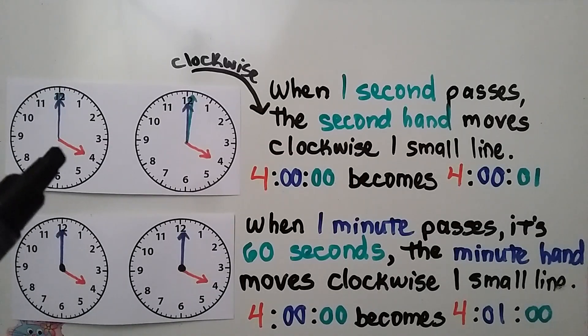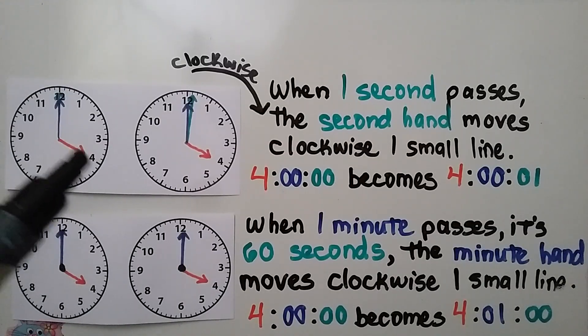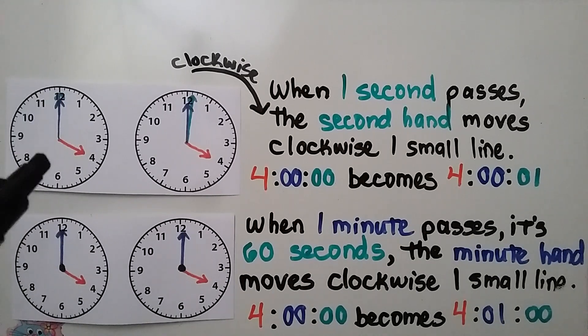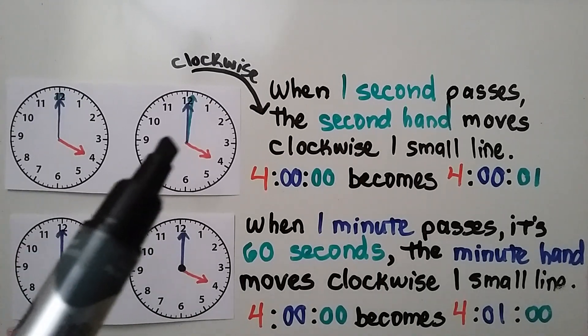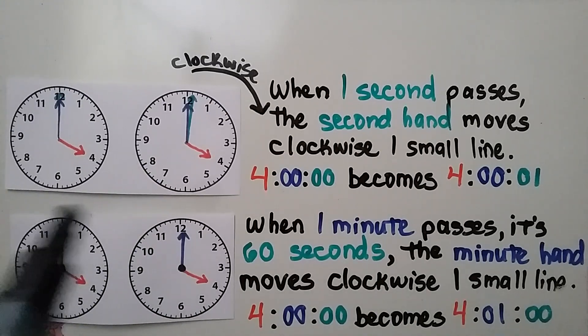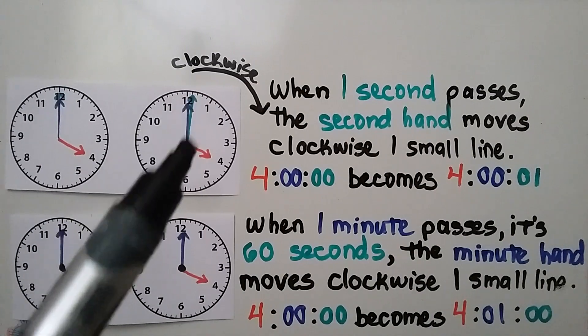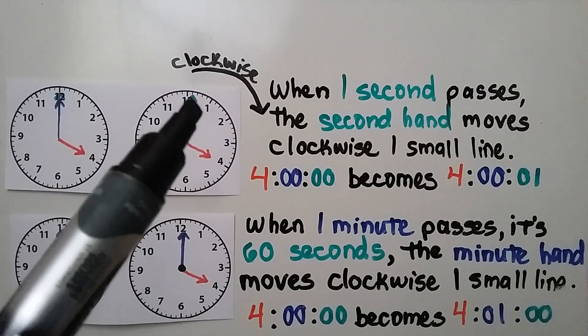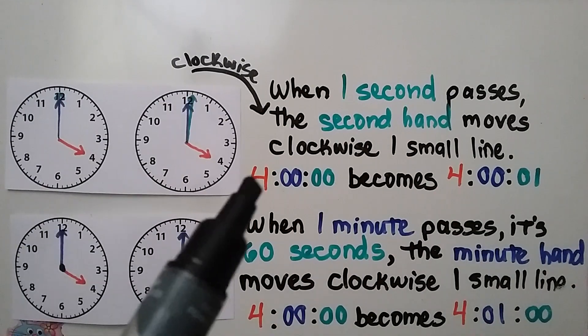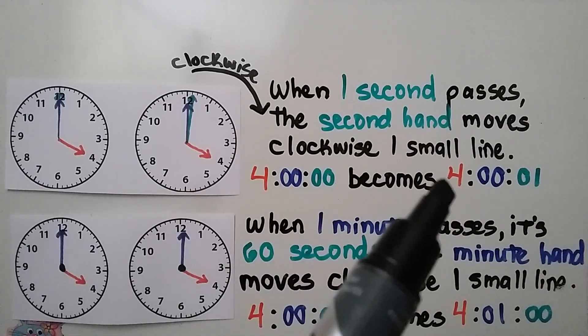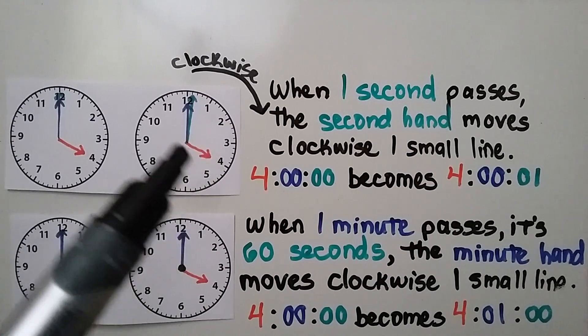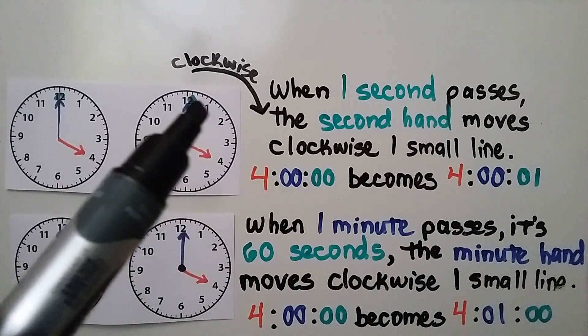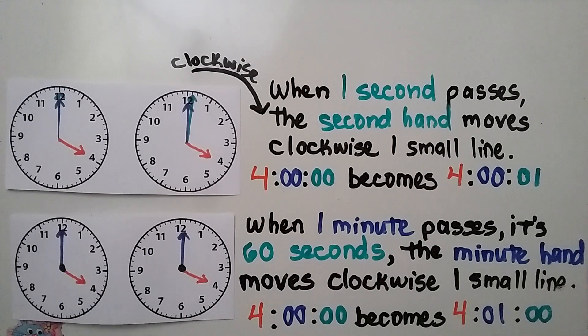This clock is showing the hour at the 4, so it's 4 o'clock. Because the minute hand is pointing directly to the 12, it's exactly 4 o'clock. When one second passes, this green second hand moves clockwise one small line, and it goes from 4 o'clock and becomes 4:00:01. The minute hand and the hour hand stayed the same, but the second hand moved one tiny little line.